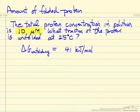In this example, we are given the total protein concentration in solution is 10 micromolar. The question we ask is what fraction of this protein is unfolded at 25 degrees C, where we are given the delta G of unfolding, and this value is at 25 degrees C.